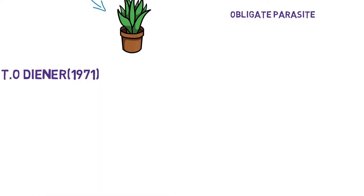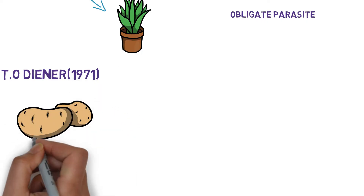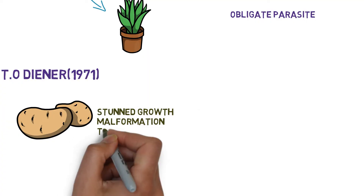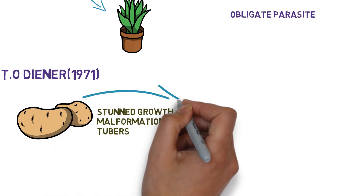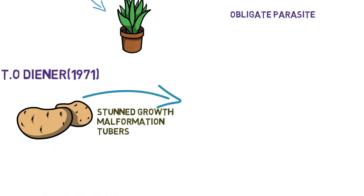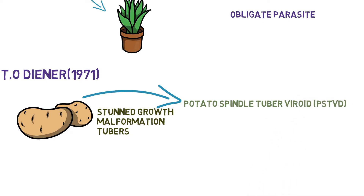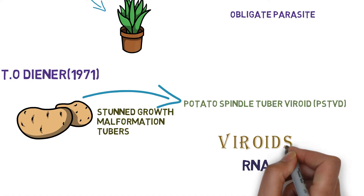Another scientist then studied potatoes and observed malformation in the potato tubers. They identified a disease present in the tubers and named it potato spindle tuber viroid disease, establishing the concept of viroids — infectious agents smaller than viruses.